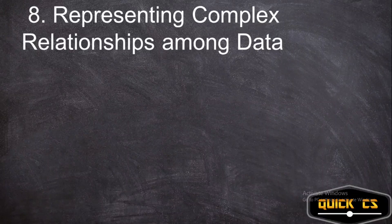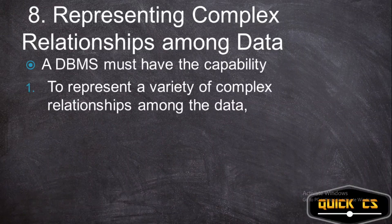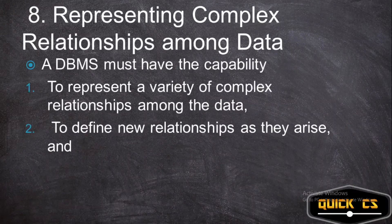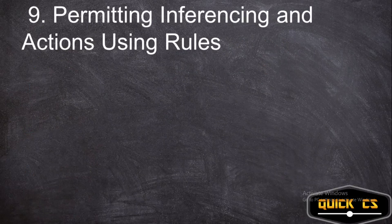Now let's look at the eighth advantage: representing complex relationships among data. A DBMS must have the capability to first represent a variety of complex relationships among data, second to define new relationships as they arise, and third to retrieve and update related data easily and efficiently. These are the capabilities a DBMS must have to have advantages over a file system.